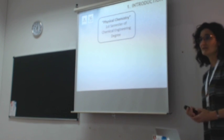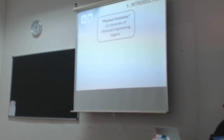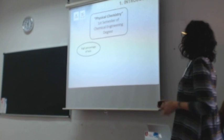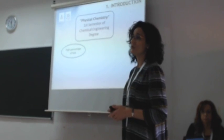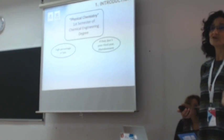Physical Chemistry is a subject in first semester of chemical engineering degree. It's a subject especially difficult for students and it has a high percentage of fails. Sometimes students need more than two years to pass the exam and sometimes they need three years to pass that subject.